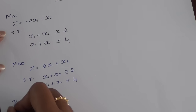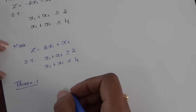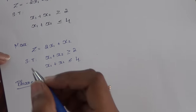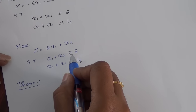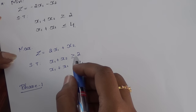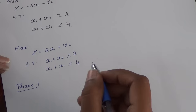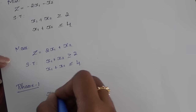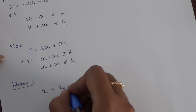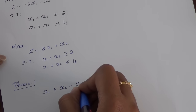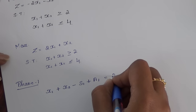Starting with Phase 1. For a greater than or equal to constraint, we add a surplus variable and also an artificial variable. The surplus variable is indicated by minus s1, and the artificial variable is plus a1.